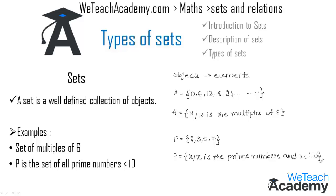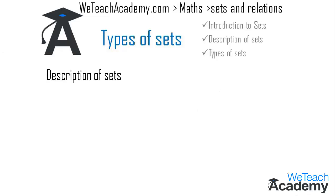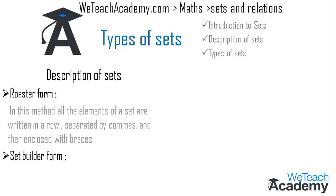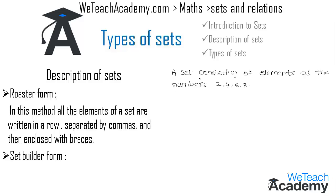Now we will discuss the description of sets. A set can be written in two forms: roster form and set-builder form. In roster form, all the elements of a set are written in a row, separated by commas, and enclosed in braces. For example, set A consisting of the numbers 2, 4, 6, 8 is written as A = {2, 4, 6, 8}.